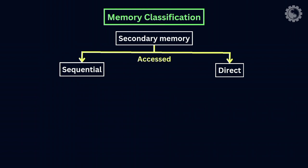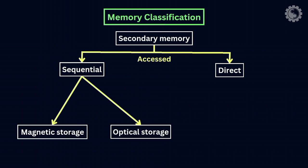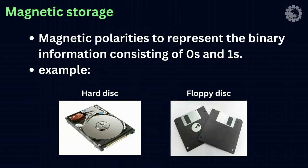Sequential access includes magnetic storage and optical storage. Magnetic storage uses two types of magnetic polarities to represent binary information consisting of zeros and ones. Examples are hard disk and floppy disk.